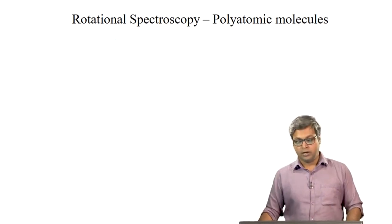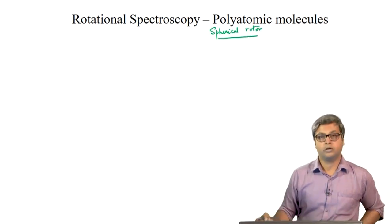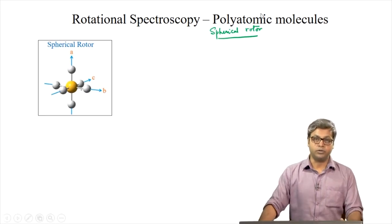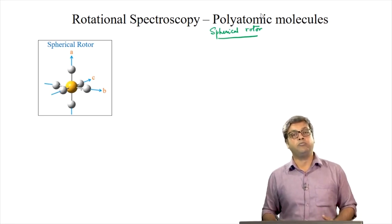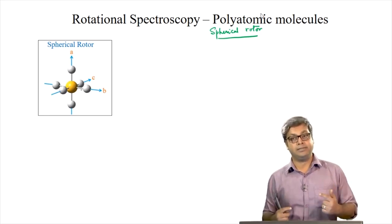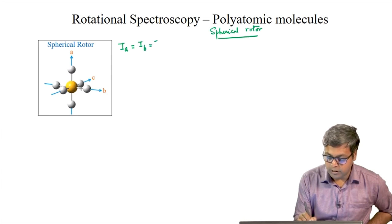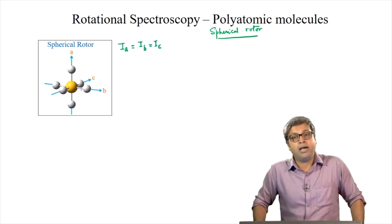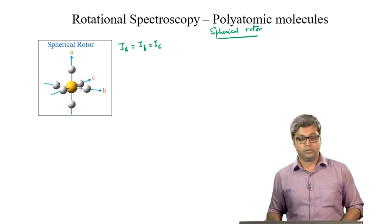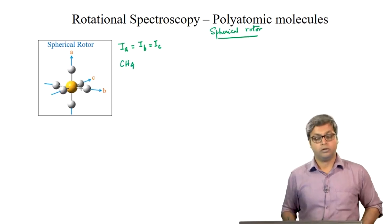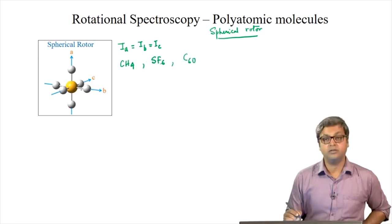First, let us focus on spherical rotors. Spherical rotors can be octahedral or tetrahedral molecules. They are called spherical rotors because all three principal moments of inertia along the three principal axes are equal: IA = IB = IC. Since all the moments of inertia are equal, the choice of axis is immaterial. Examples of spherical rotors are methane (CH4), SF6, and C60 (fullerene).